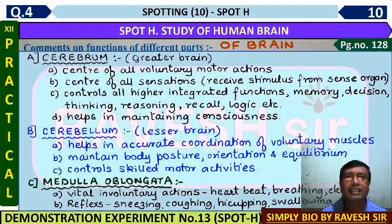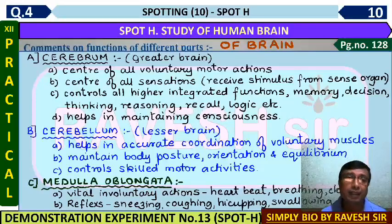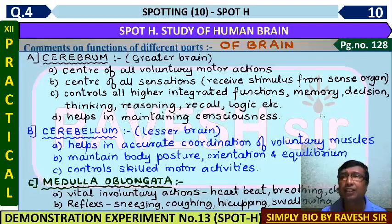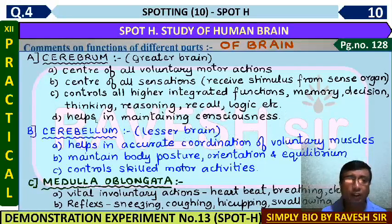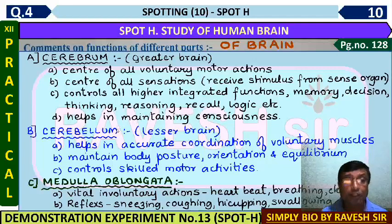Here we are writing the different parts of the brain. The main parts of the brain as seen from the lateral side: cerebrum, that is the greater brain, which is the center of all voluntary actions, center of all sensations, and center of all higher integrated functions such as memory, decision-making, thinking, reasoning, recall, and logic. It also helps in maintaining consciousness. These are the main functions of the cerebrum, and these points you can also write in the board theory examination.